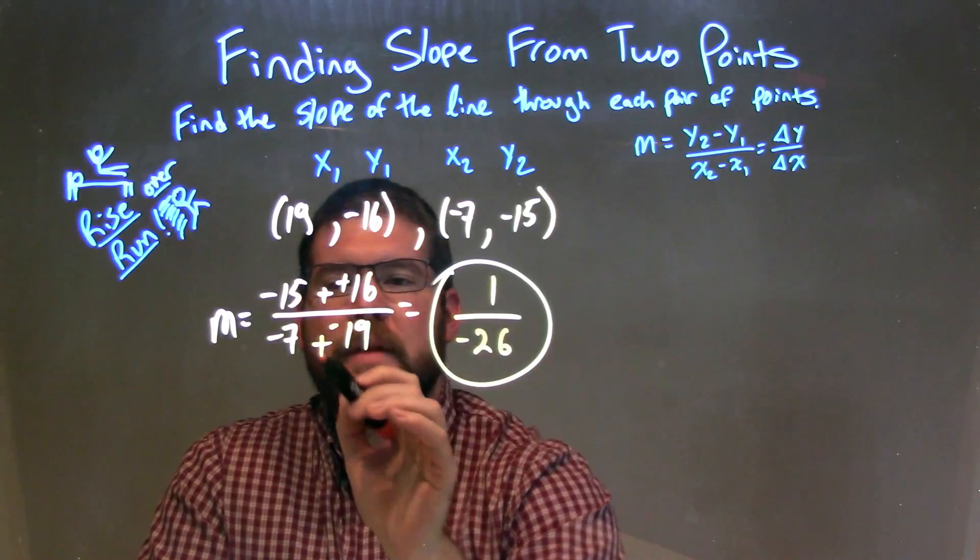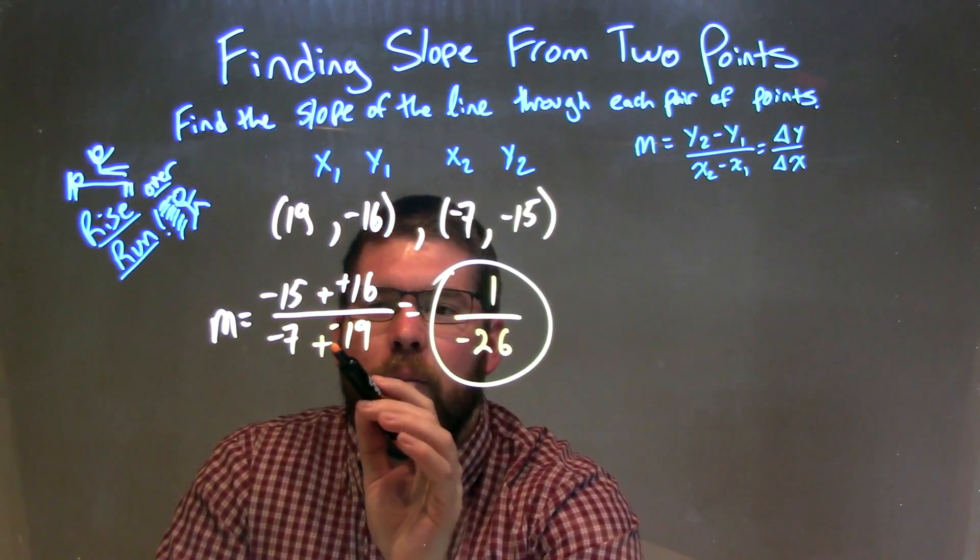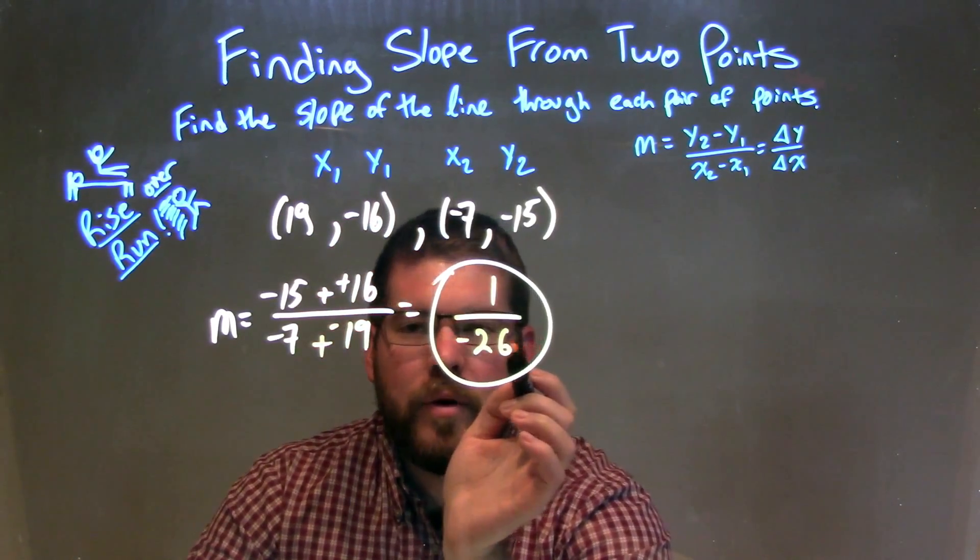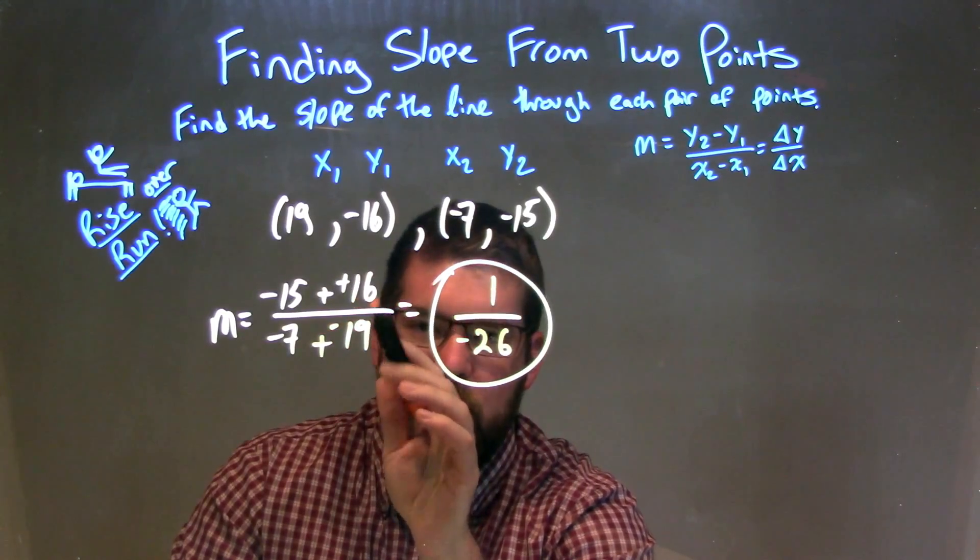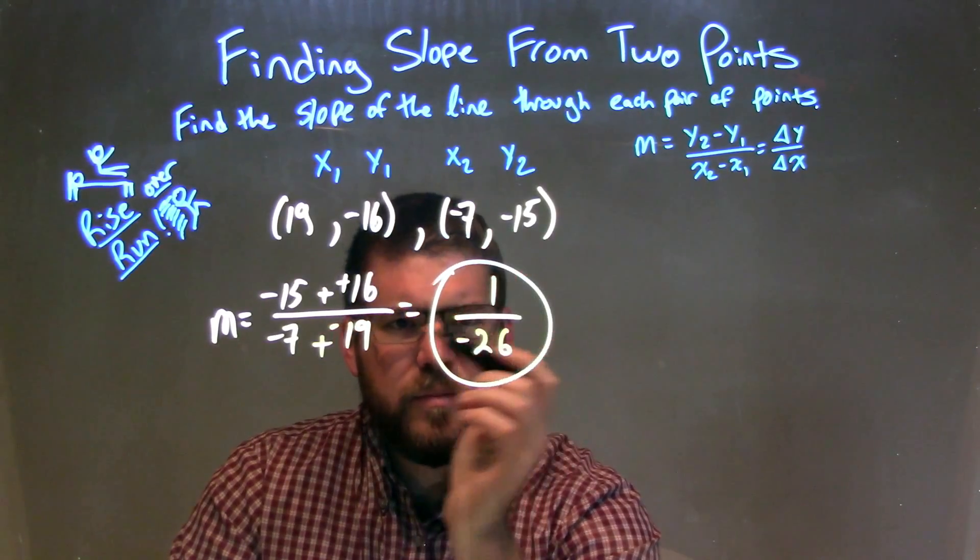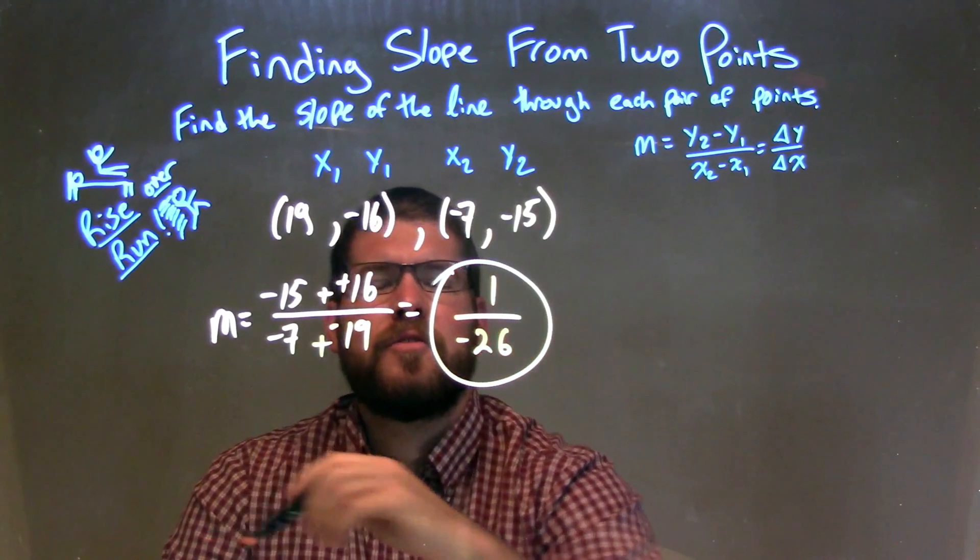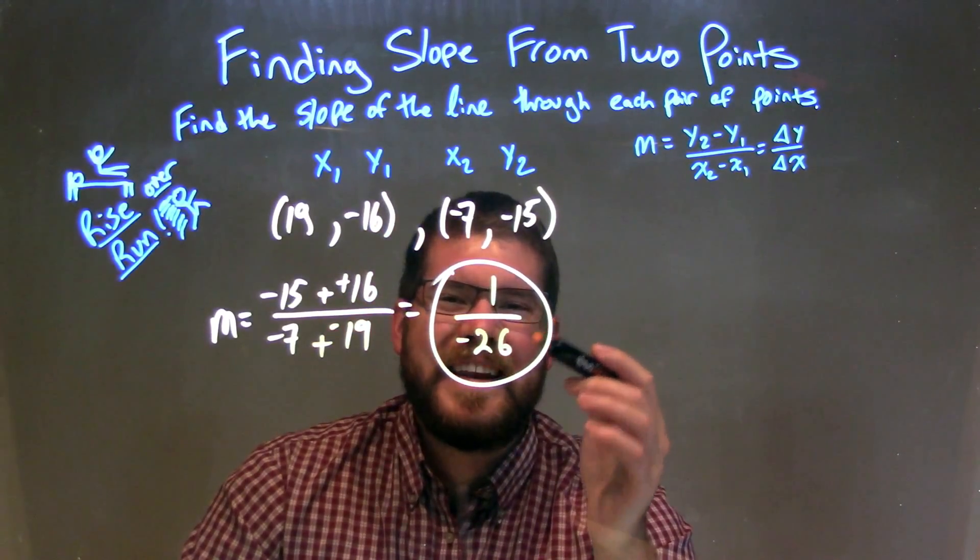Negative 15 plus a positive 16 was 1. And negative 7 plus a negative 19 was negative 26. Remember, there was subtraction, we made it plus a negative, and plus a positive for each one respectively. And so now we have our final answer. Our slope here is 1 over negative 26.